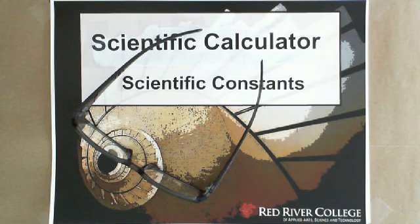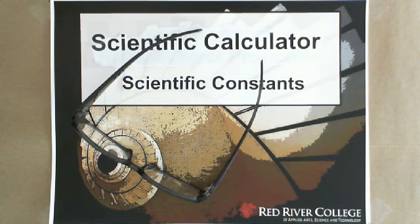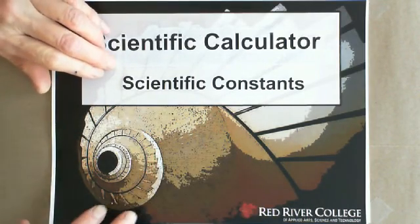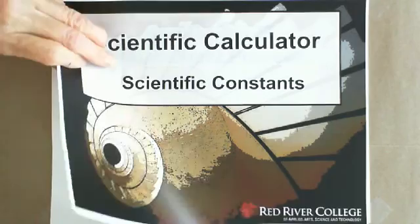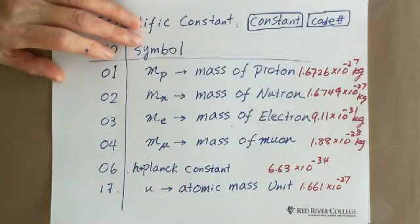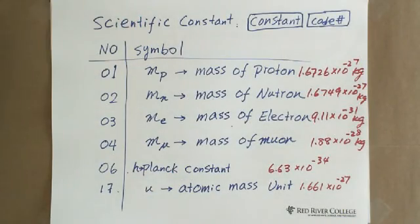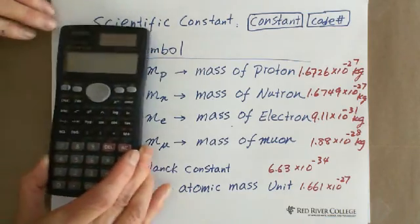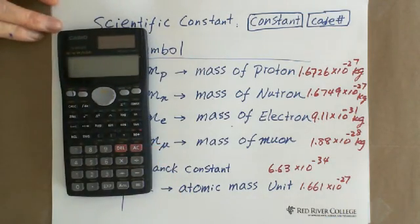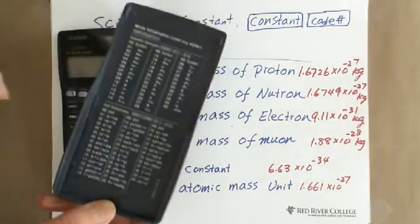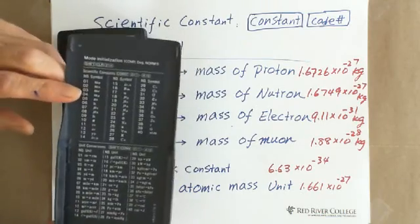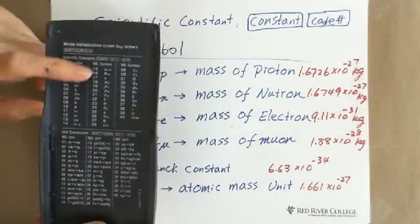Hi, welcome to iSGuys. This session is for scientific constants. There are 40 commonly used constants in scientific calculating. In the Casio FX-991, we can see on the top part all the constants.